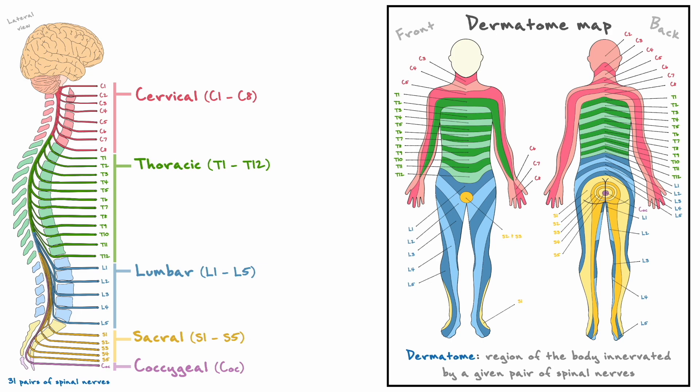Two important aspects to consider with dermatomes: first, the regions that they cover overlap greatly, and for that reason, if you have some damage to a particular spinal nerve pair, you won't completely lose sense of touch or movement in that theoretical region. Secondly, the dermatome regions vary greatly among individuals, so it is important to keep that in mind when consulting that graphic.